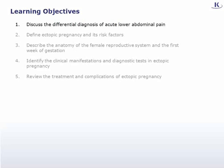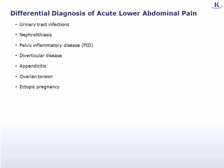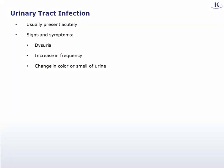We'll begin with our first learning objective and discuss the differential diagnosis of acute lower abdominal pain. Common causes include urinary tract infections, nephrolithiasis, pelvic inflammatory disease, diverticular disease, appendicitis, ovarian torsion, and ectopic pregnancy. Most of these conditions can present with symptoms on either side of the lower abdomen. Urinary tract infections usually present acutely but would be less dramatic, and would most likely present with dysuria, increased frequency, or change in color or smell of urine — none of which are reported in this case.